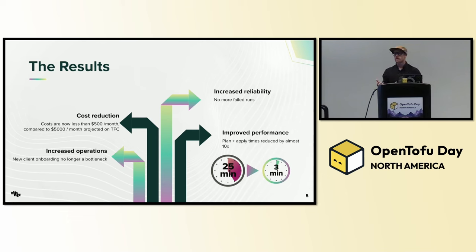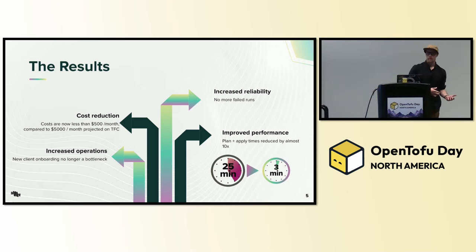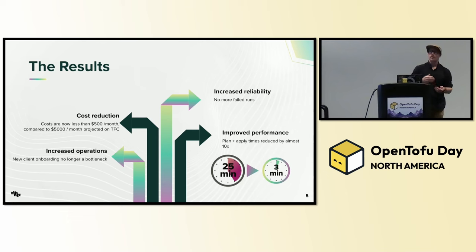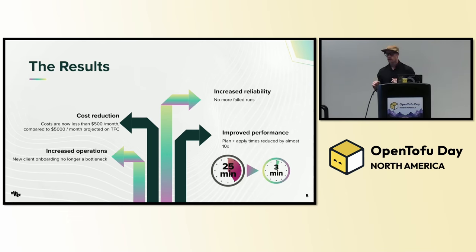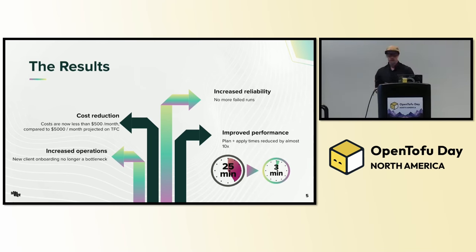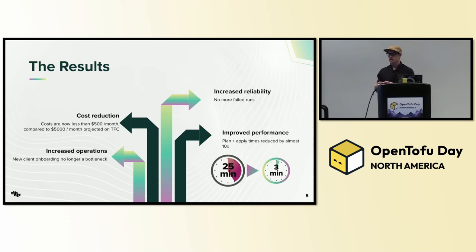Increased reliability: they no longer had these horrible 50% failures. They didn't have to ask why their automation was continuously causing problems or why they weren't getting new clients in the door. New client onboarding was no longer a bottleneck. When we started with them, they had about 400 clients in this single root module. When we ended the engagement two-and-a-half months later, they were at 600-plus clients. We also had improved performance: plan and apply went from 25 minutes down to three minutes — close to a 10x speed improvement.